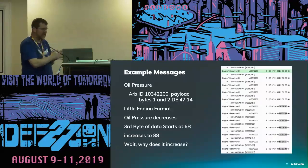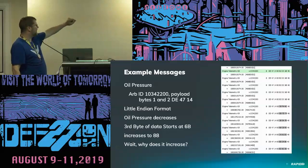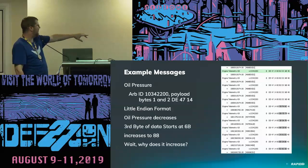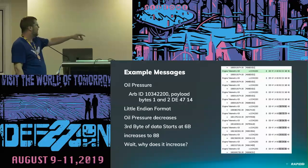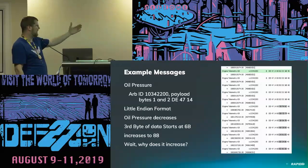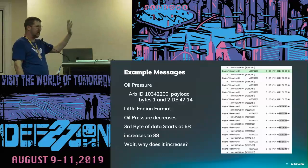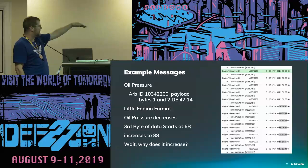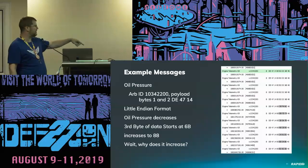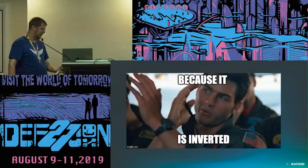Here are some example CAN bus messages. On the right we have the arbitration ID — that's like your network address for CAN bus. We have a preamble in hex of DE4714. That identifies, on this particular system, the oil pressure. It's in Little Endian, so the most significant byte is on the right instead of the left. As the oil pressure decreases, the value goes up — it's backwards. So as the oil pressure is going down, the value is actually going up because it's inverted.